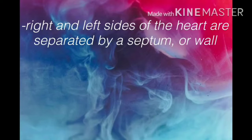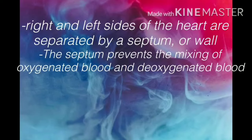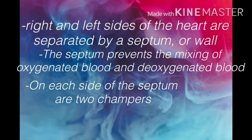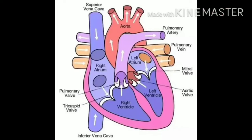The heart is also made up of special cells called cardiac muscle cells. The right and left sides of the heart are separated by a septum, or wall. The septum prevents the mixing of oxygenated and deoxygenated blood. On each side of the septum are two chambers. The structure of the heart includes: right atrium, right ventricle, left atrium, left ventricle, superior vena cava, inferior vena cava, aorta, pulmonary artery, pulmonary vein, and mitral valve.